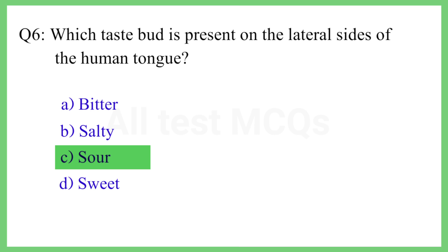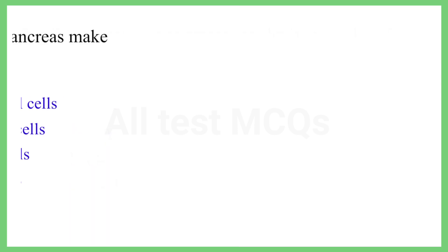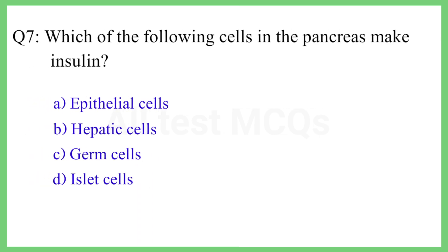Question No. 7. Which of the following cells in the pancreas make insulin? The correct answer is Option D: Islet cells.